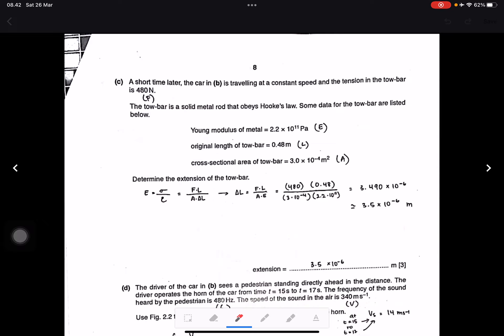Question i: Determine the extension of the towbar. Young's modulus E is stress over strain, or F times L divided by A times delta L. So delta L equals F times L divided by A times E. We include the numbers and get 3.5 times 10 to the power negative 6 meters. I also checked with MathCAD, the maximum is the same.